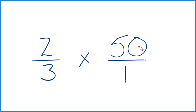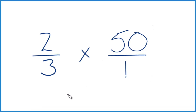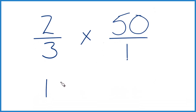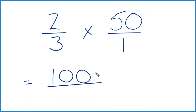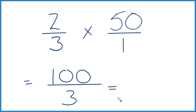When we're multiplying fractions, we're going to take the numerators, multiply them, and then the denominators. Two times 50 equals 100, and then 3 times 1 equals 3. So we end up with 100 over 3.